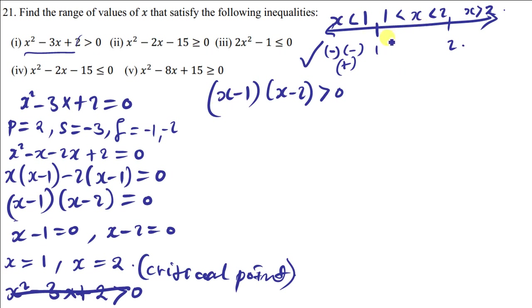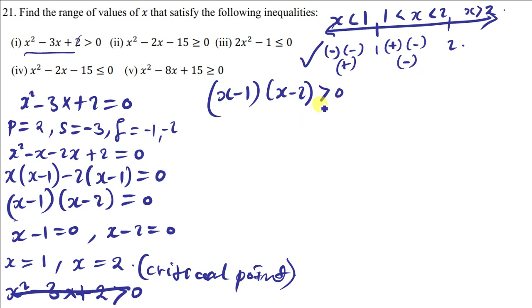We also get any number between 1 and 2 — say 1.5. 1.5 minus 1 gives 0.5 (positive), and 1.5 minus 2 gives a negative answer. Negative times positive gives negative. Is a negative number greater than zero? No — meaning this region is not part of our solutions.